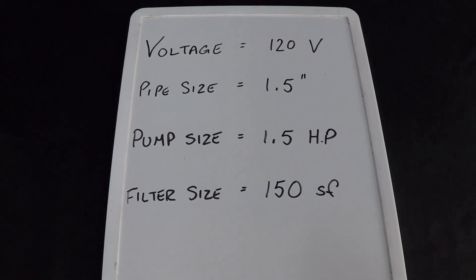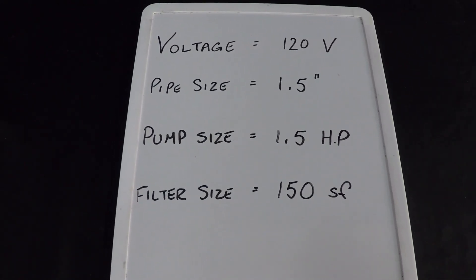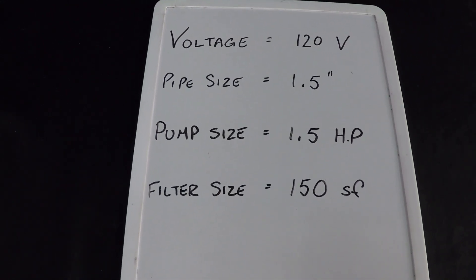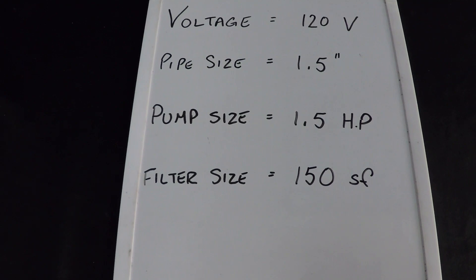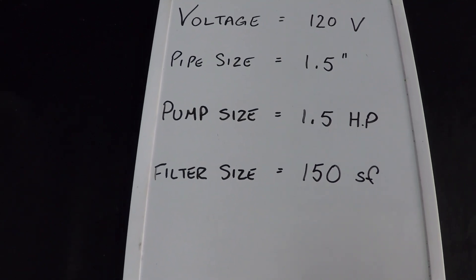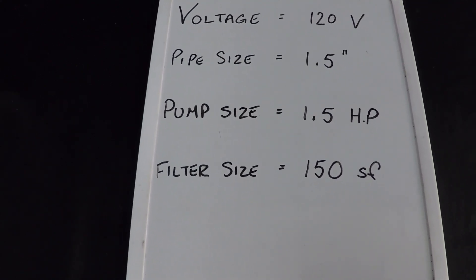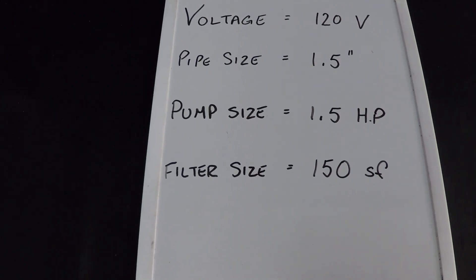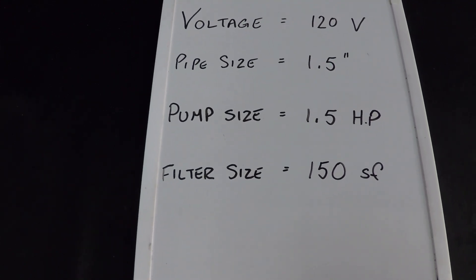In this test, we're going to be looking at a plumbing system where we're using 120 volts to power the pump. The pipe size is going to be 1.5 inch for the suction line and return line. The pump size is a 1.5 horsepower variable speed pump, and the filter size is a cartridge filter, 150 square feet.